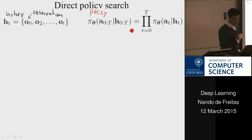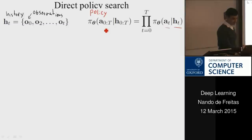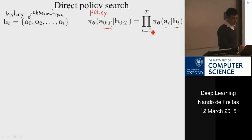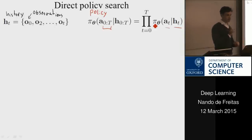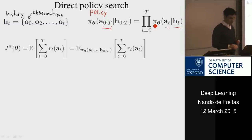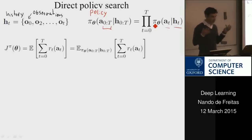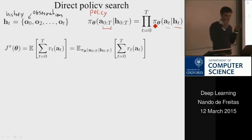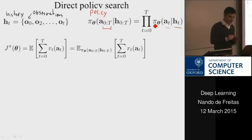We make the assumption that conditioned on the histories, actions are independent, so the policy over T decisions factors as a product of individual decisions. They are only independent given the history — if the history is not given, they become coupled. We need the notions of policy, actions, and histories.